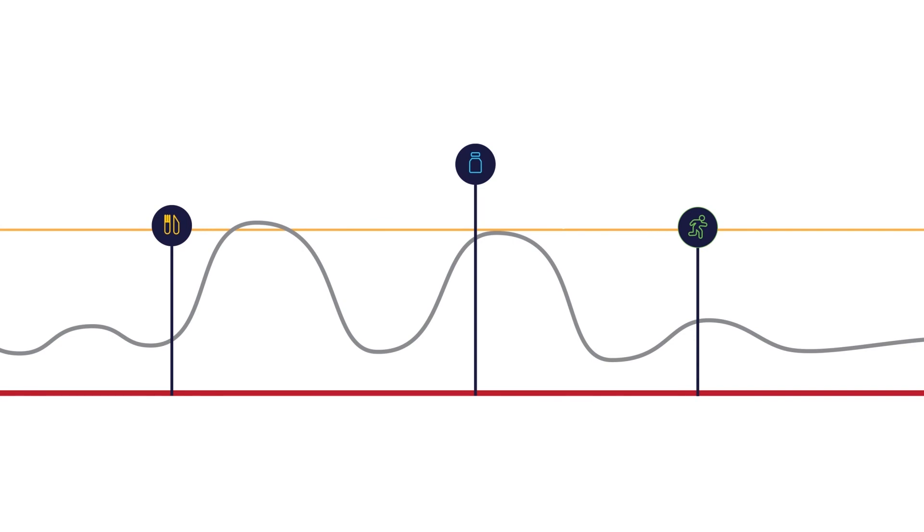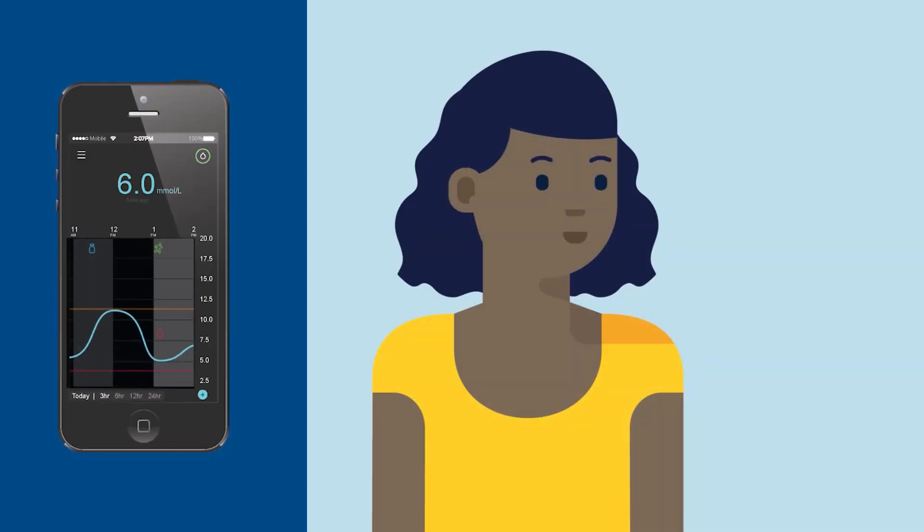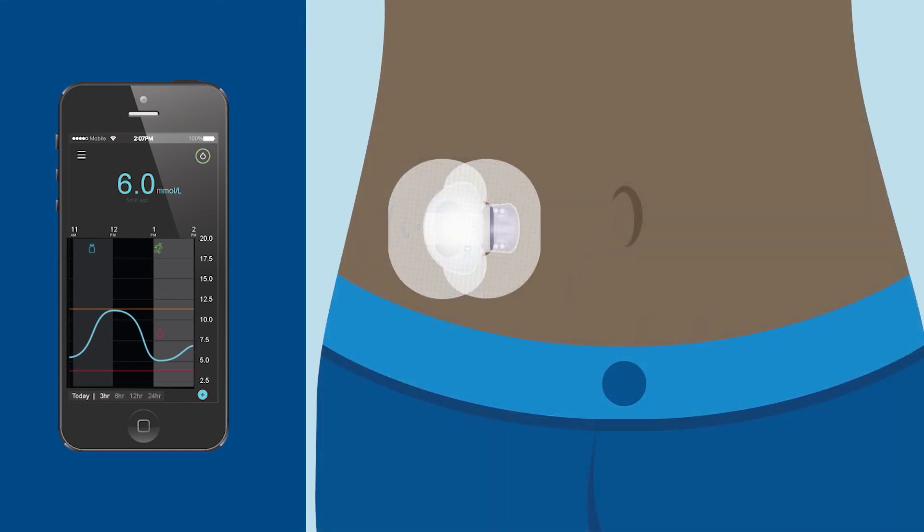When you use CGM, the focus is not on the individual number, but on the trends, since your glucose constantly changes. Is your glucose rising slowly, or is it falling rapidly? Your CGM system can alert you on your high and low glucose values, and show you the speed and direction that your glucose levels are moving, giving you time to take action if needed.